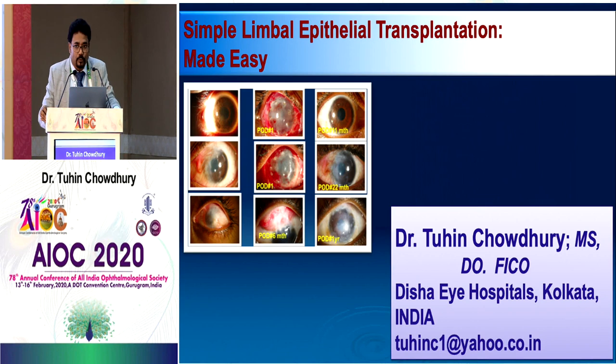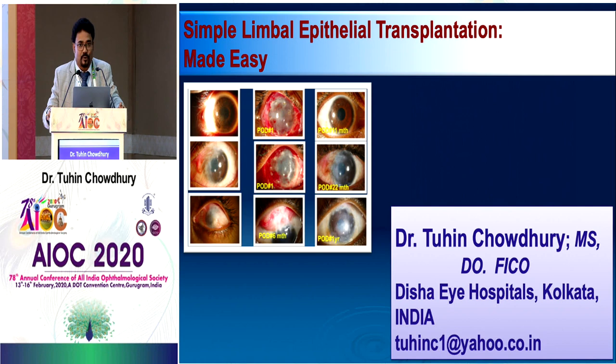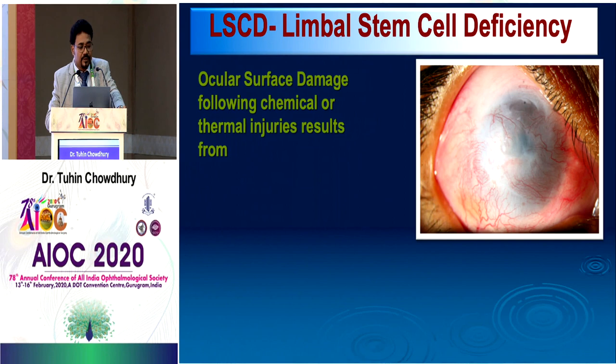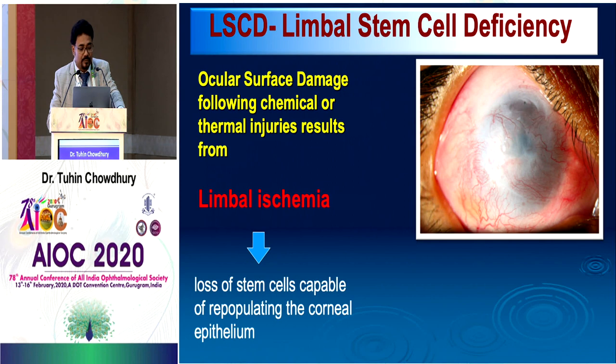Good morning everyone. Dr. Shreya has already told us about the indications of AMT — amniotic membrane transplantation — the commonest being chemical or thermal burn. If the initial management is proper, good outcomes can be achieved. If not, further procedures are needed for visual rehabilitation. I will speak for the next seven minutes on SLET. In limbal stem cell deficiency, ocular surface damage following thermal or chemical injuries results from limbal ischemia and subsequent loss of stem cells that repopulate the corneal epithelium.